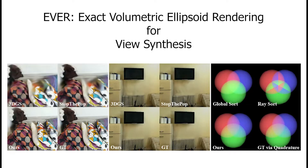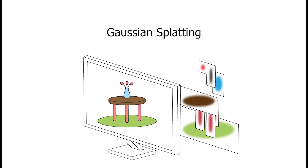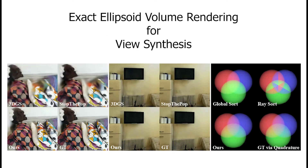However, we also draw inspiration from 3D Gaussian splatting, which models the scene using Gaussian billboards and alpha compositing. We've switched from Gaussians to ellipsoids, which allows us to perform volume rendering instead of alpha compositing. Not only does this remove popping artifacts, it results in better color blending between primitives, leading to better performance, especially on larger scenes.